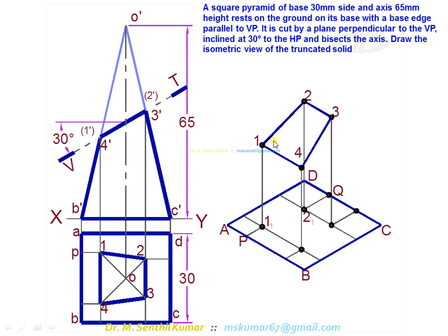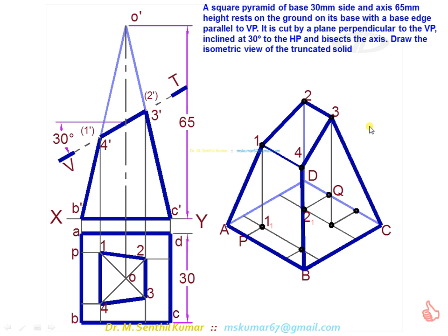Join 1, 2, 3, 4. That is the section profile in isometric. Then, draw the slant edges and darken only the visible edges. That completes the problem.